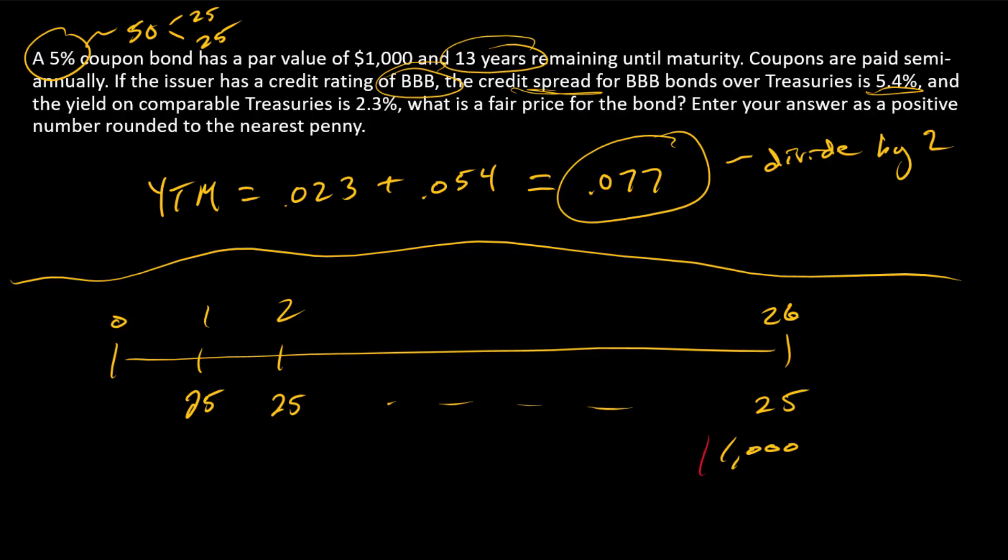So what do we need for our financial calculator? $1,000 is going to be FV. $25 is going to be PMT. And I'll make both of these positive because they're inflows to the bond investor. 26 is N, and I is going to be 7.7% divided by 2.